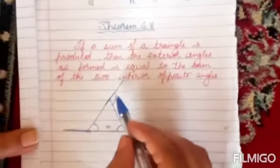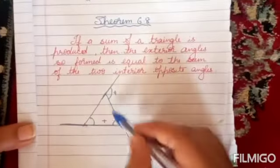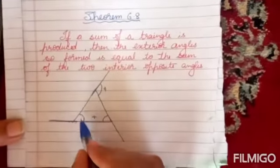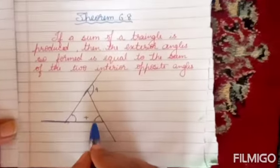If the sum of a triangle is produced like this, then so formed is equal to the sum of two interior angles.